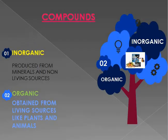Compounds are of two types: inorganic and organic. Inorganic compounds are those compounds which are produced from minerals and non-living sources. For example, copper, silicon, phosphorus, copper sulfate, sulfuric acid, and hydrochloric acid — these are all compounds produced from minerals. Organic compounds, on the other hand, are obtained from living sources like plants and animals.